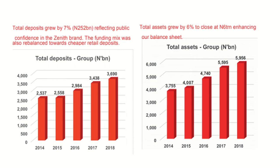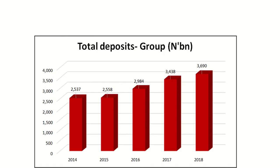I looked online and found this Zenith Bank visual for 2018 — their total deposits and total assets. Start looking at this and tell me: what do you think is wrong here? Let's discuss what you think is wrong.